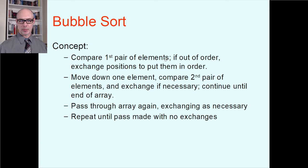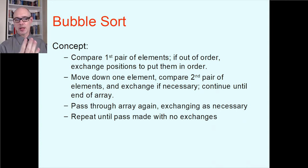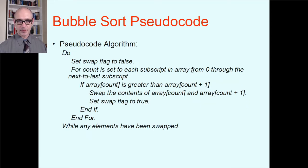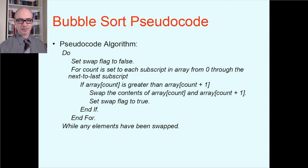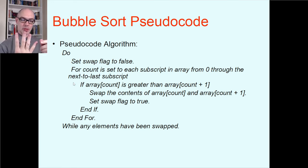You compare the first pair of elements; if out of order, exchange positions; move down one element; compare; exchange if needed; continue to the end of the array. Repeat that until you have a pass where you didn't make any exchanges at all — that's how bubble sort discovers the array is fully sorted. In the pseudocode, here I have a do-while loop. You definitely have to go through this at least once, and you keep a Boolean variable called swap to mark whether you made any swaps on this particular pass.